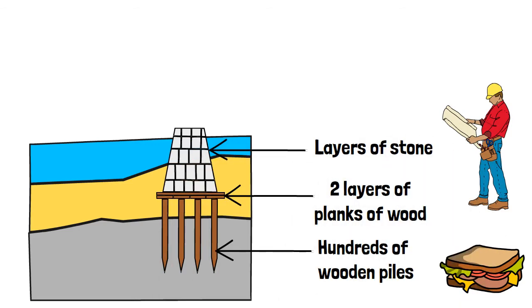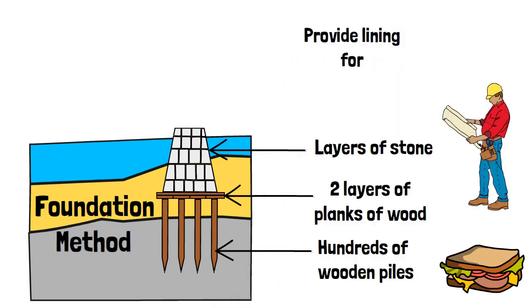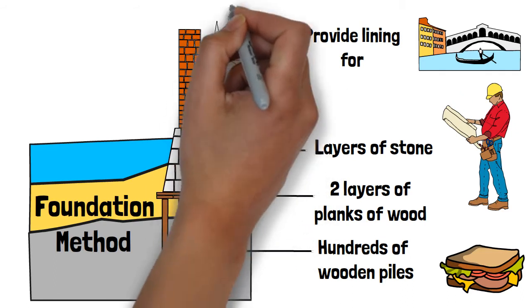layers of stone would sit on top of the planks of wood. This foundation method would provide both the lining for its famous canals, and provide solid groundwork for the brick and marble structures to sit on.